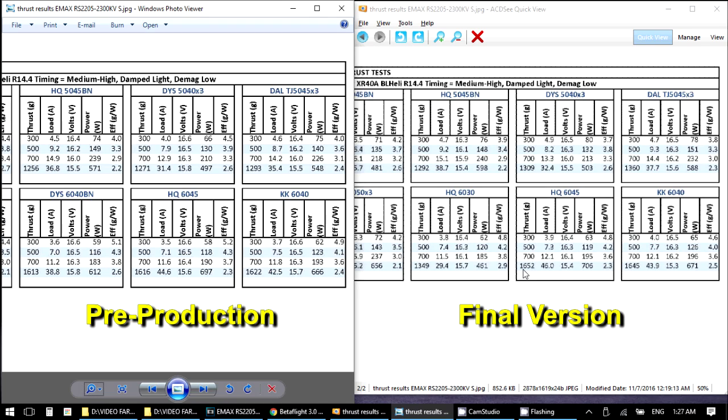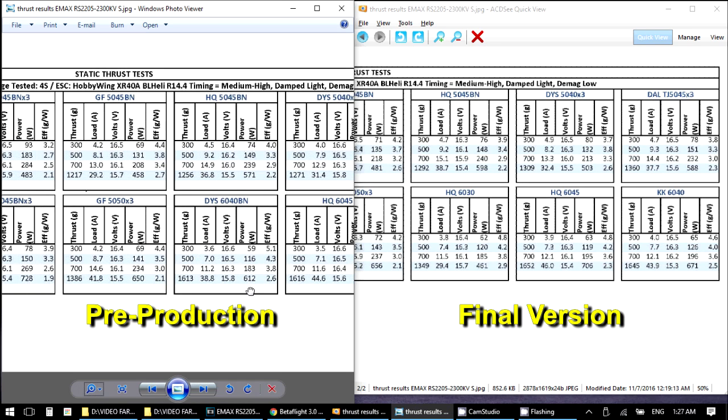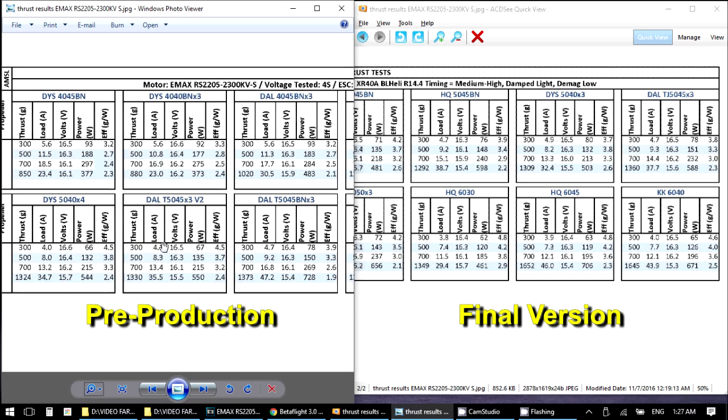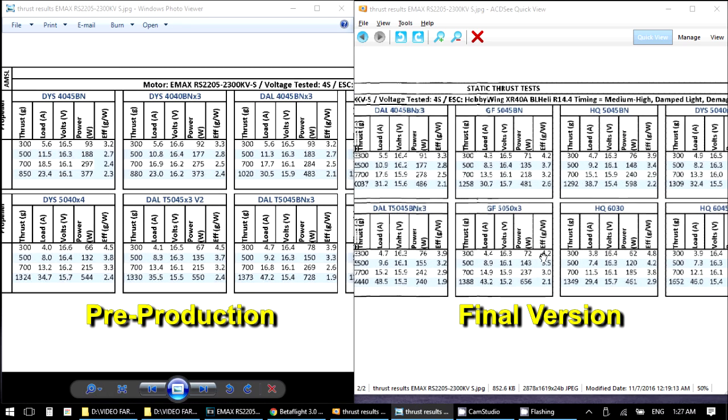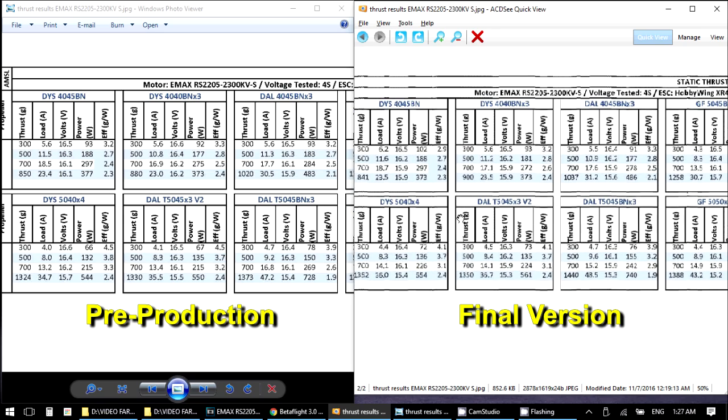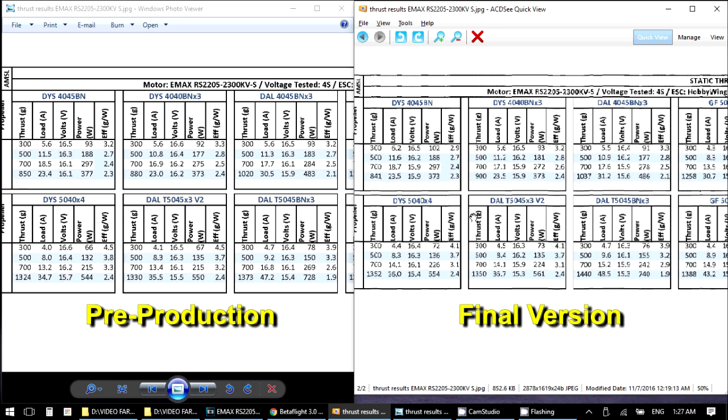About 30 to 40 here on the 6045, so pretty much across all the tests we're seeing a good amount more thrust. So that's, I thought that was interesting, comparing the two versions.